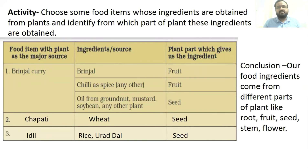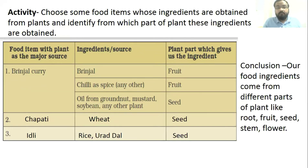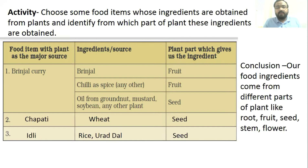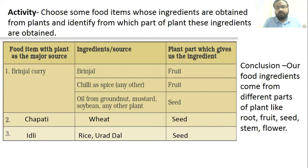Now let's discuss an activity: choose some food items whose ingredients are obtained from plants and identify from which part of the plant these ingredients come. First, brinjal curry — ingredients are brinjal, chili, and oil. Brinjal is a fruit, chili is also a fruit, and oil is obtained from seeds of different plants.